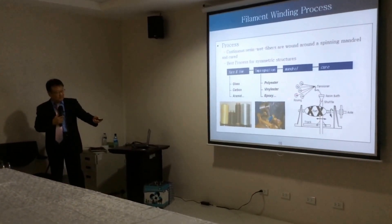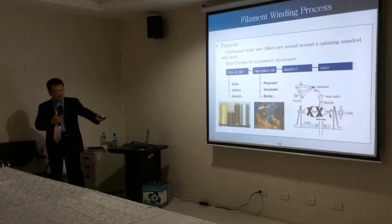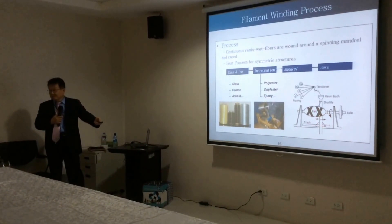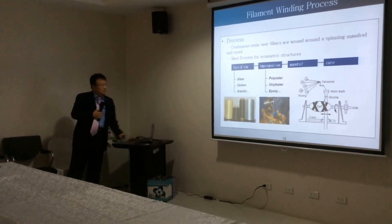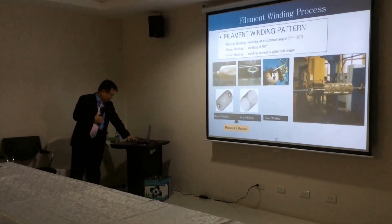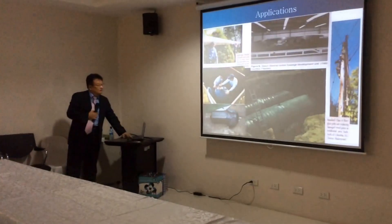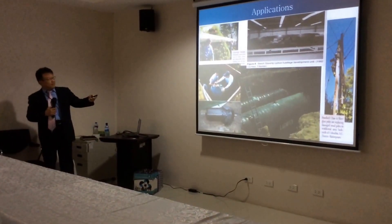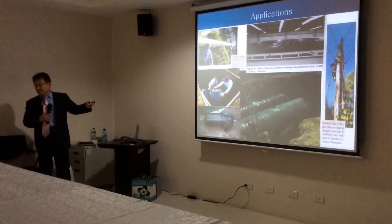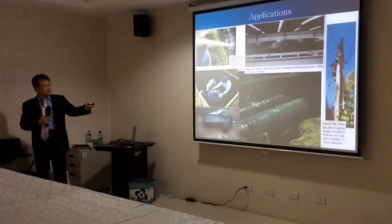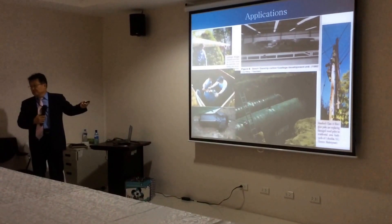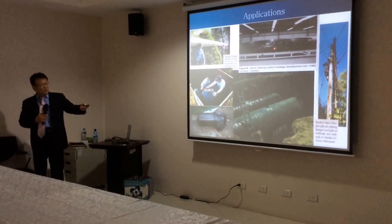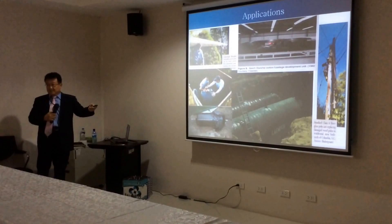The continuous fibers are dipped into a resin bath and then wound around a mandrel to make symmetric parts. Examples include long glass fiber tubes — so light you can carry two at once — and small to mid-sized airplane body structures.